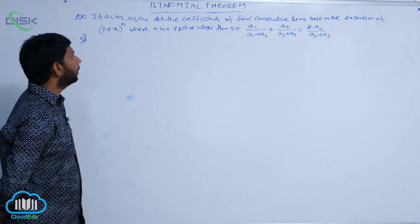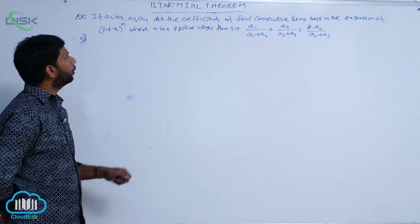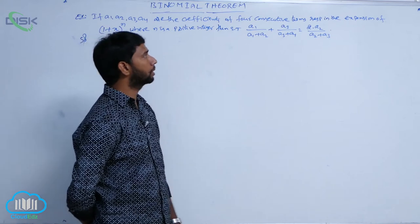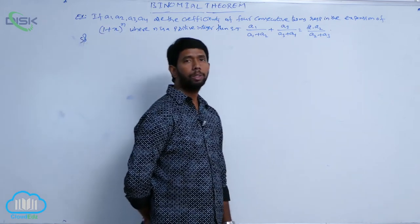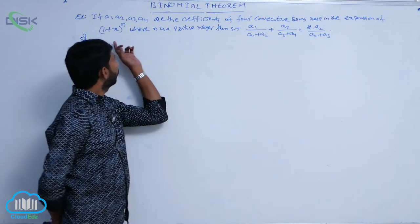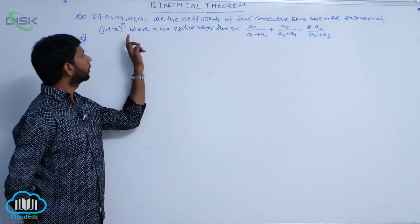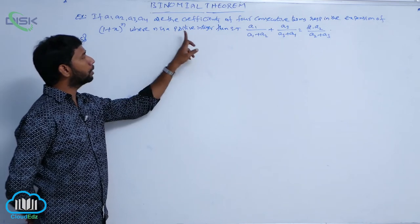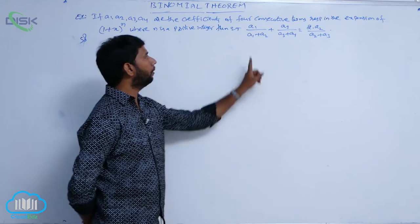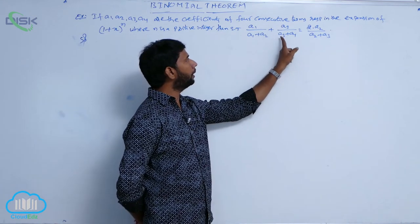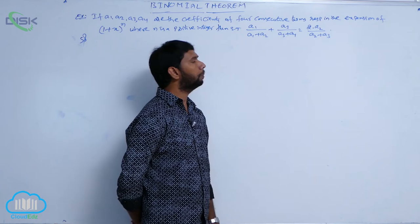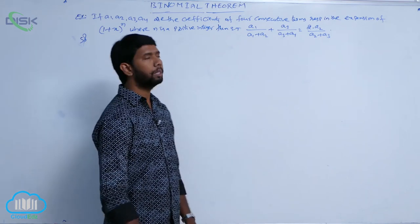If a1, a2, a3, and a4 are the coefficients of 4 consecutive terms in the expansion of (1+x)^n, where n is a positive integer, then show that a1/(a1+a2) + a3/(a3+a4) is equal to 2a2/(a2+a3).